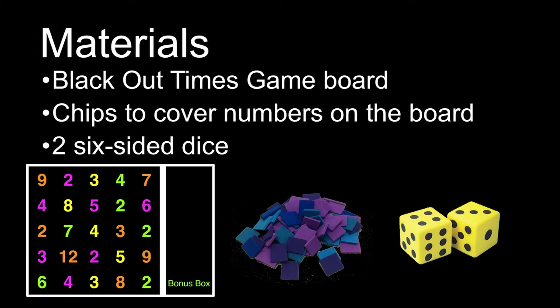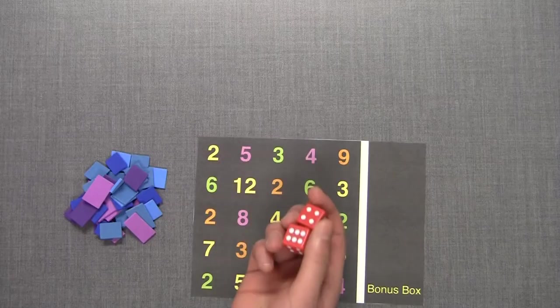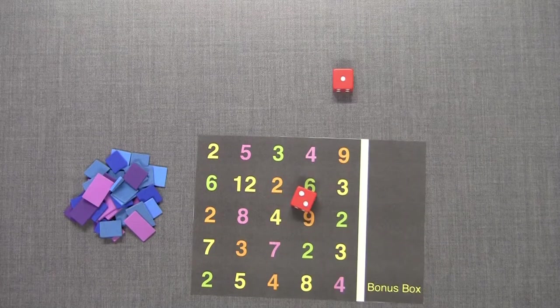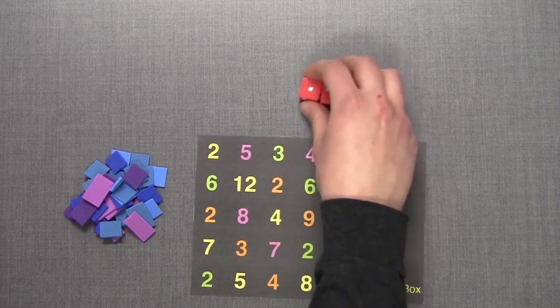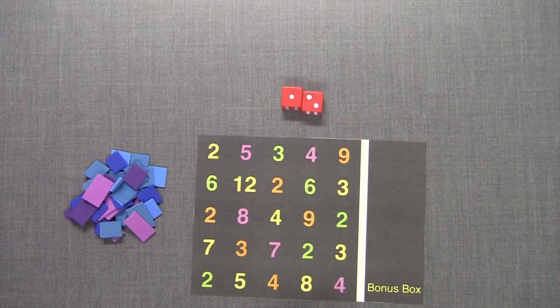The oldest player goes first. On your turn roll both dice. Create a two digit number from what you rolled. If you roll a 1 and a 2 you can create either 12 or 21. This is your blackout number.